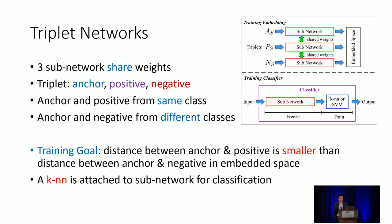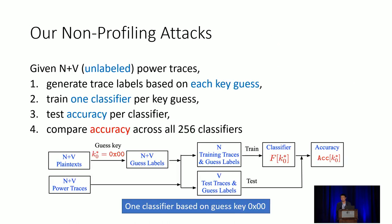We extend the profiling attack method to non-profiling attacks. We assume we have N plus V unlabeled traces. We guess the key — say key is 0 — generate corresponding labels for all unlabeled traces, train a classifier, and test the classifier to obtain accuracy over V test traces. We repeat this guessing, labeling, training, and testing 256 times, once for each key guess, ending up with 256 classifiers and 256 accuracy values.